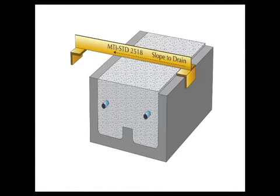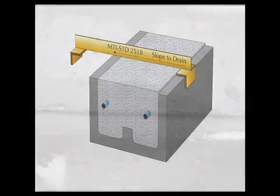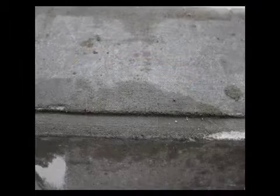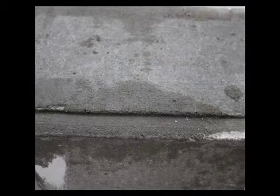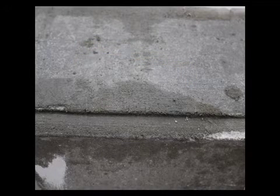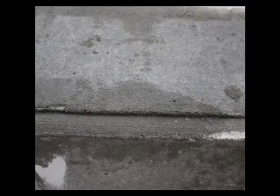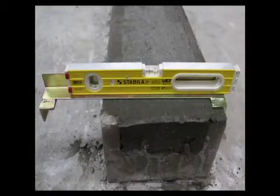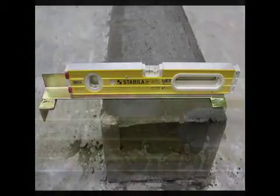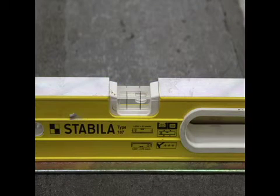The slope to drain tool from MTI is made to put a 1/4 inch slope to drain to the exterior in the bond beam grout in a CMU wall or at the top of a poured stem wall. You can see there is a half bubble slope in this 12 inch bond beam block grout.